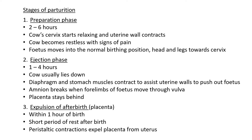The fetus moves into the normal birthing position — head and legs toward the cervix. The second phase is called the ejection phase, when the baby comes out; it usually lasts about one to four hours depending on the breed and circumstances. The cow usually lies down during this time. The diaphragm and stomach muscles contract strongly to assist the uterine walls in pushing out the fetus, with all the muscles in the abdominal cavity helping.